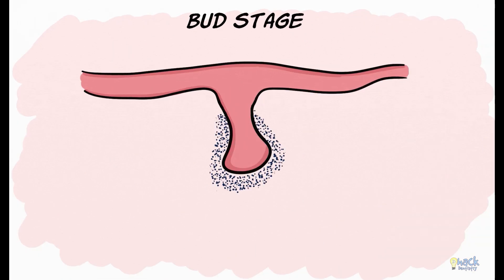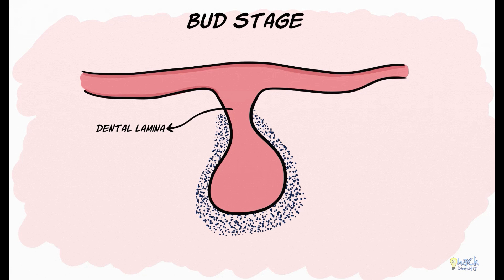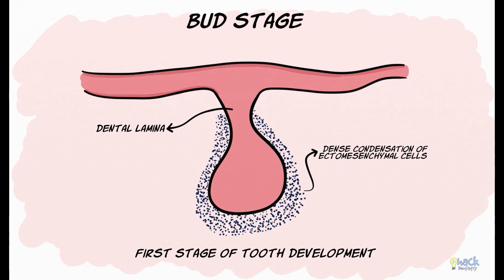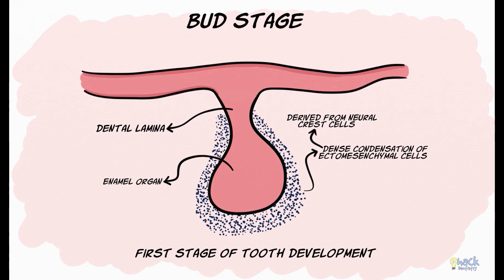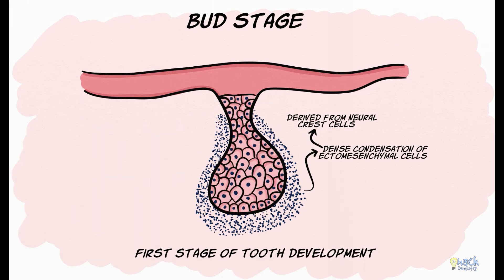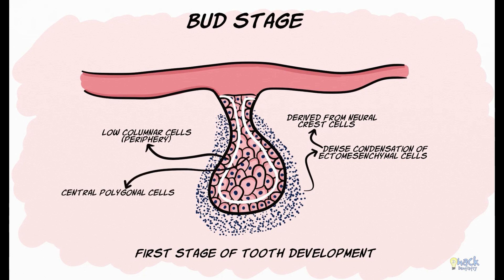The placode then proliferates and takes the shape of a bud, giving rise to the name bud stage, which is the first stage of tooth development. During the process of tooth bud formation, there is also a dense condensation of cells surrounding the tooth bud. These cells are called ectomesenchymal cells and are derived from the neural crest cells. The tooth bud is referred to as the enamel organ due to the fact that it would eventually give rise to the enamel of the tooth.